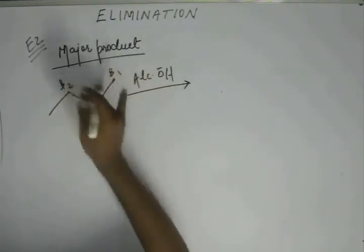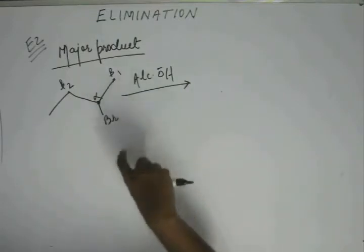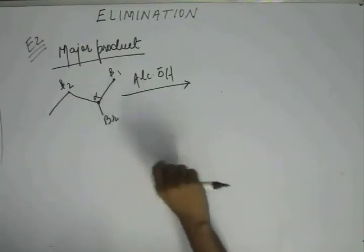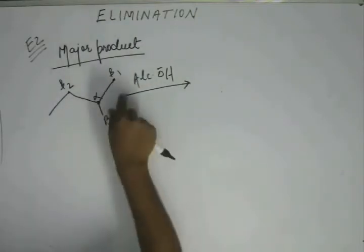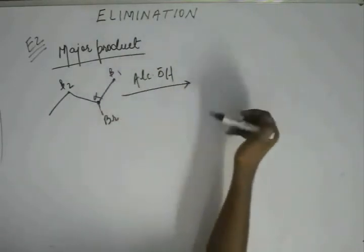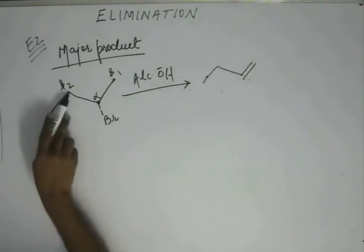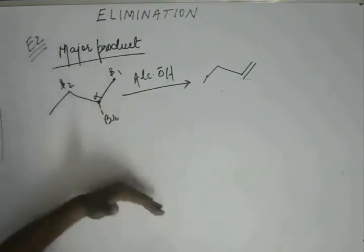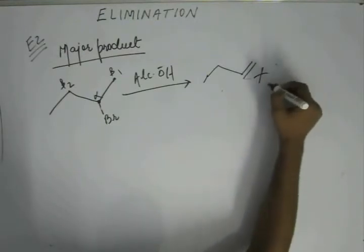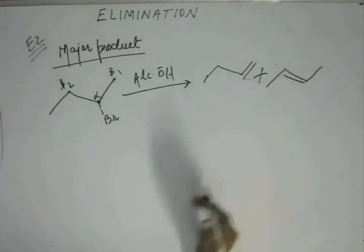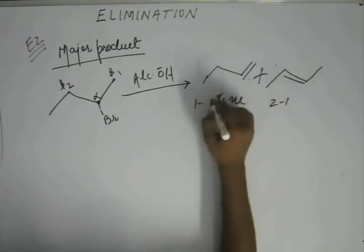Let's label them beta 1 and beta 2, draw both products, and then decide which is the major. If we abstract a hydrogen from beta 1, this carbon pumps in electrons throwing away the leaving group, forming a double bond at that position — giving us 1-butene. If we abstract a hydrogen from beta 2, a double bond forms between C2 and C3 — giving us 2-butene. To be specific, this is trans-2-butene.